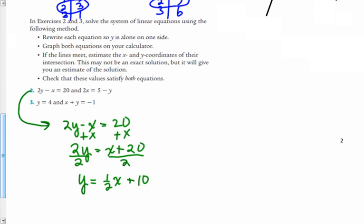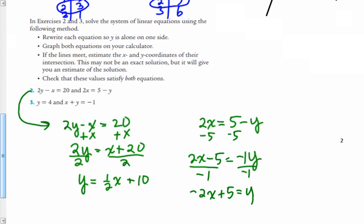And the other equation, 2x equals 5 minus y. To solve that for y, I'm going to subtract 5 from both sides. So I get 2x minus 5 equals negative y. To get rid of this negative, remember the coefficient would be negative 1. So I'm going to divide both sides by negative 1. And I get negative 2x plus 5 is equal to y.